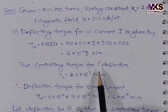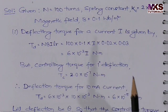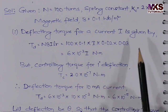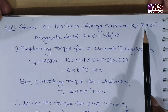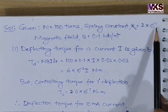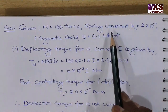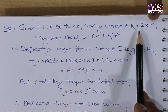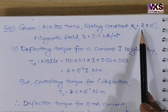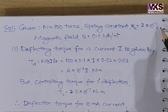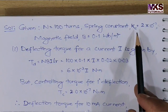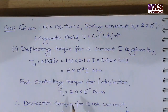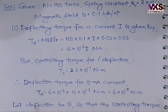Now, the controlling torque for 1 degree deflection is the spring constant value, which is 2 × 10⁻⁷ Newton meter. So the controlling torque for 1 degree deflection equals 2 × 10⁻⁷ Newton meter.